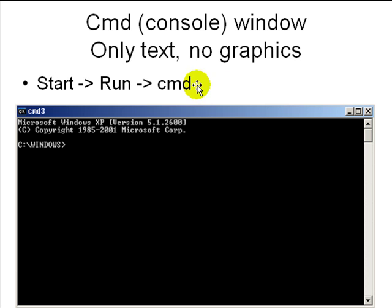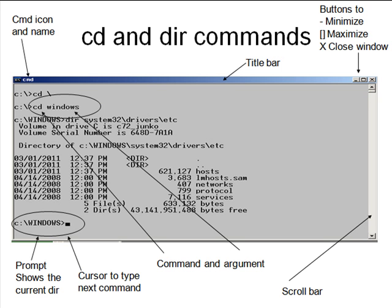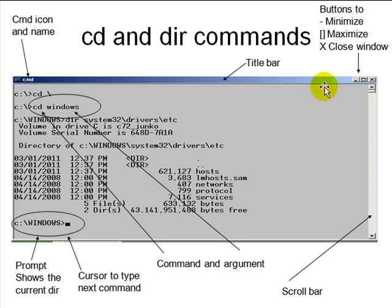When you go to Start > Run > CMD you get a Windows command prompt. This is Windows XP but you probably have a newer one. In the top-left corner you see the icon for CMD and 'C:'. The command name is CMD. The top is called a title bar, and there are three buttons on the right for minimize, maximize, and close. 'C:\>' is called a prompt.